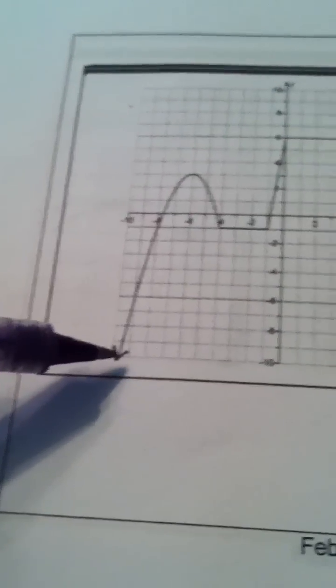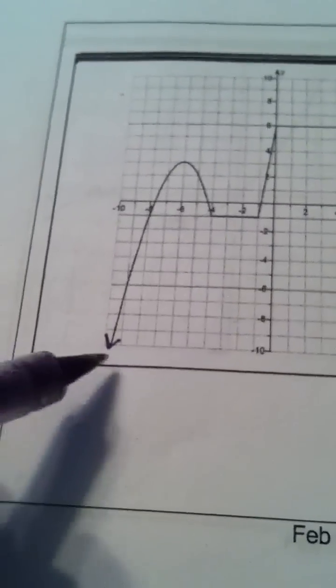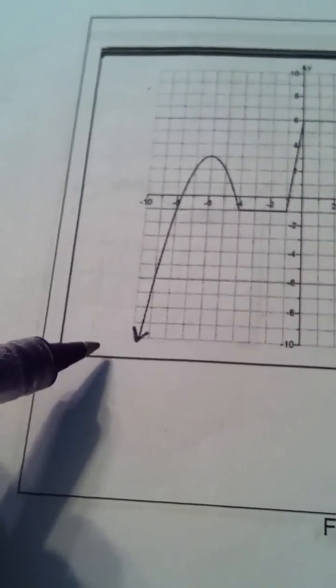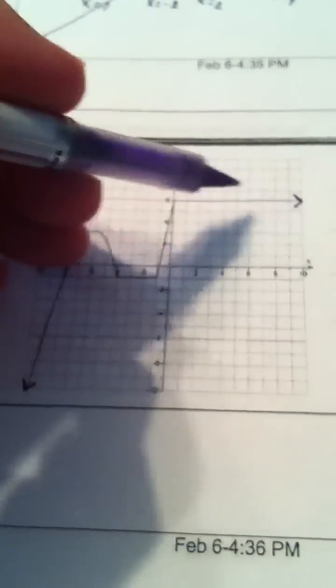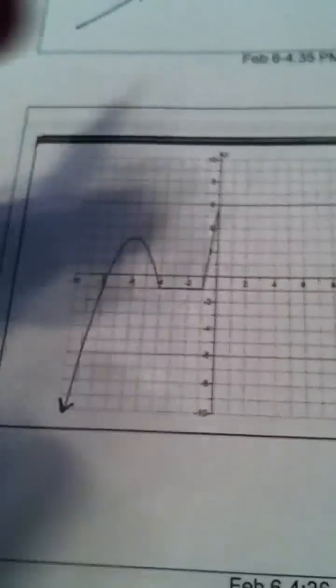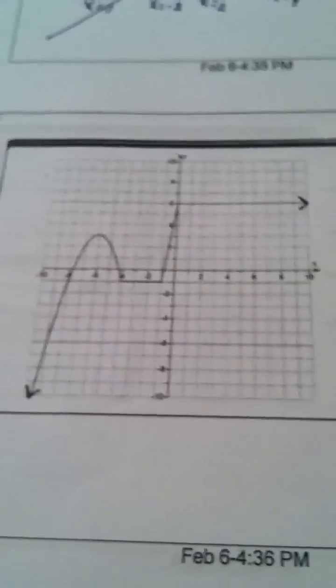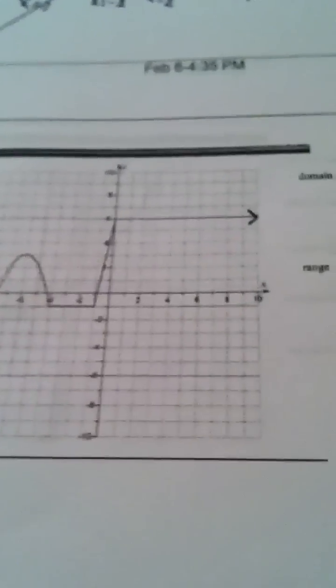Now, what this arrow means is not only does the graph drop, but it also is going further to the left, and further and further and further. And of course this arrow means the graph's going forever to the right, and we have everything in between, so we're spanning the entire x-axis.